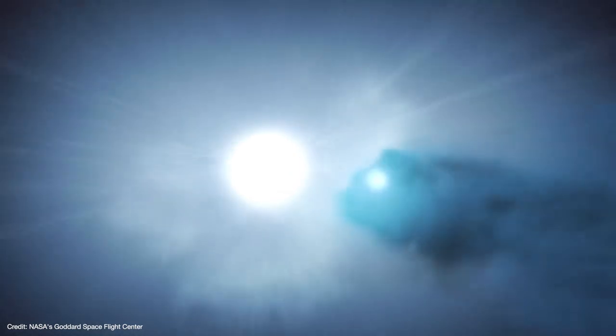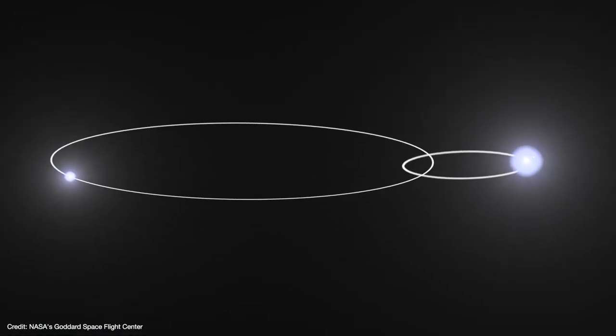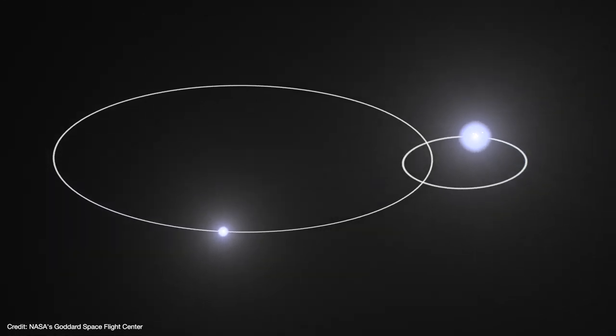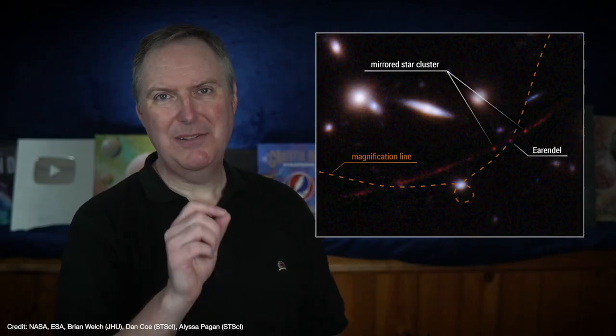But the thing about those massive binary systems is that typically one of the two stars is much more massive and luminous than the other. So even then the light we are seeing is probably coming from just one of the stars in the Earendel system. But there is another possibility.